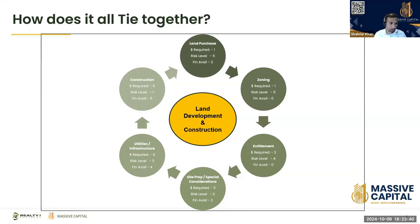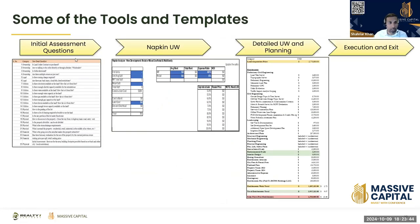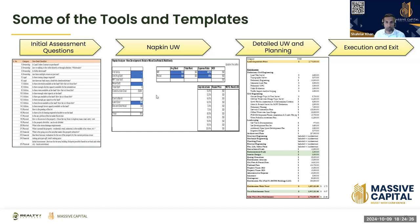Some tools we use: first we do an initial assessment, asking questions about ownership, legal, utilities, physical, and financial aspects. If that works, we do a napkin underwriting — what are we building, what's the rent, what does the cap rate look like, very back-of-envelope. If that works, we go to detailed underwriting and planning. Eighty to ninety percent of the time a deal doesn't pass the initial assessment and we never get to detailed underwriting. When someone sends us a deal, we have to start at the beginning and work forward — we can't start in the middle.